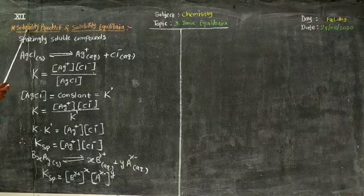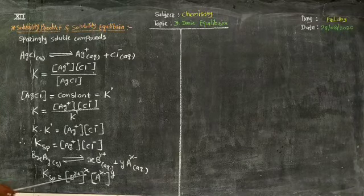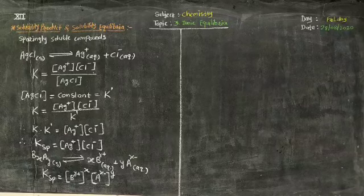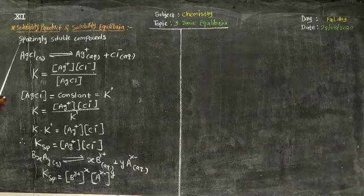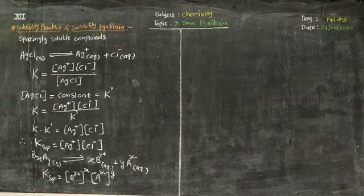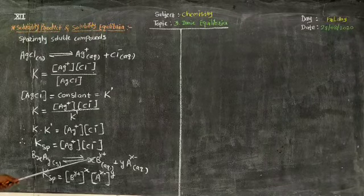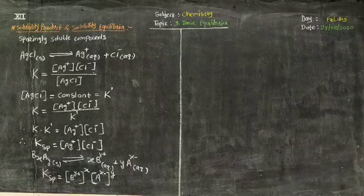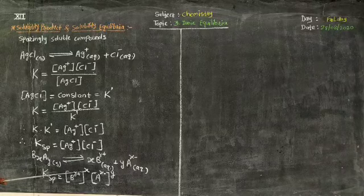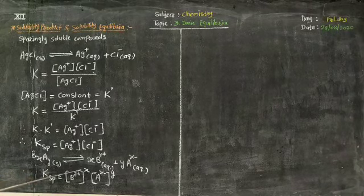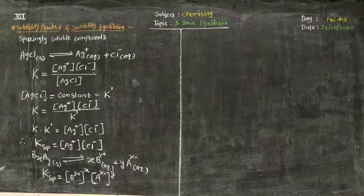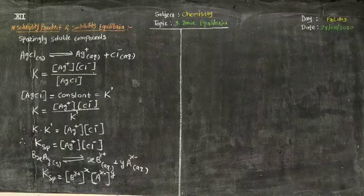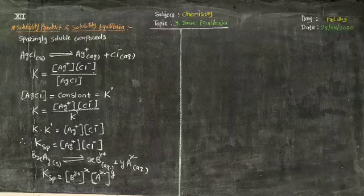The definition of solubility product: In the saturated solution of a sparingly soluble salt, the product of equilibrium concentrations of the constituent ions — cation and anion — raised to the power equal to their respective stoichiometric coefficients in the balanced equilibrium expression at a given temperature is called solubility product. This is a very simple definition you have to remember.